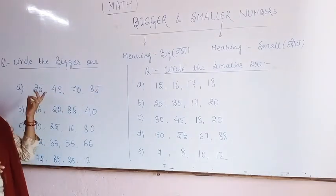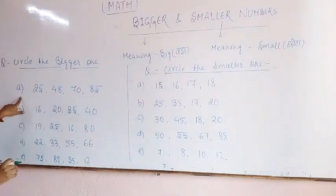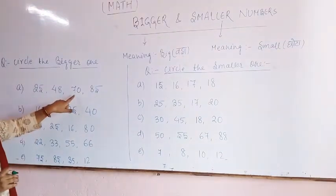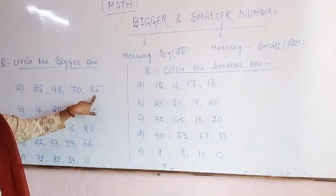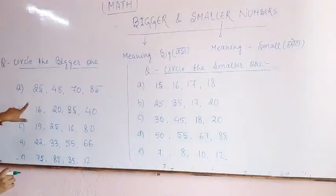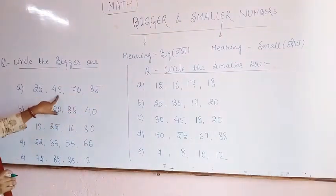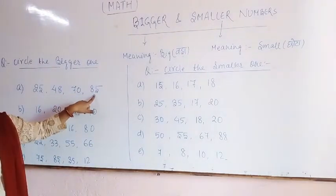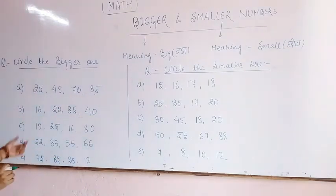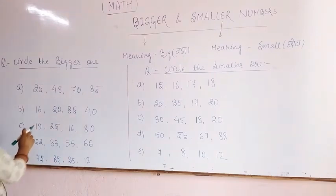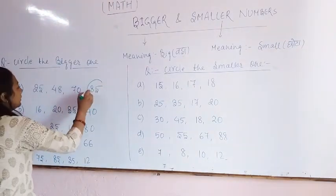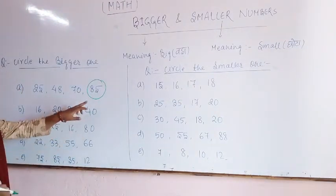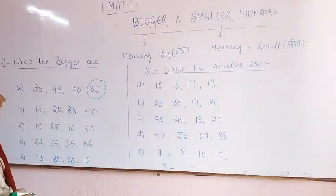You all know about the tables. So the first question is: 25, 48, 70, and 85. Which one is the bigger one? 85 is the bigger one.